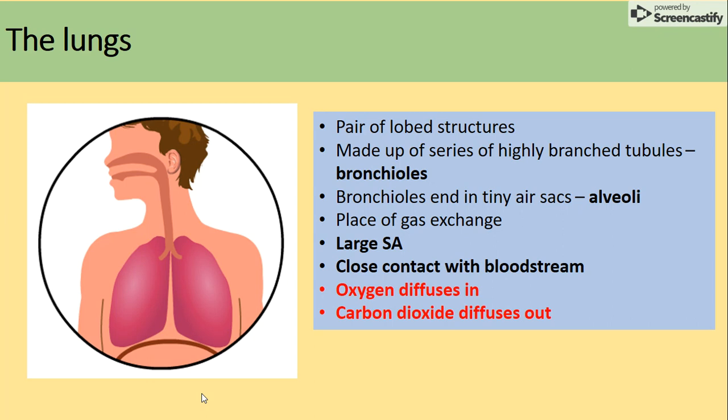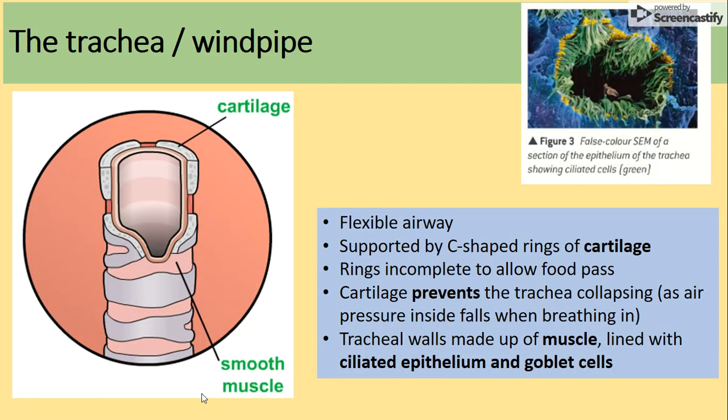The windpipe, or trachea, is a flexible airway supported by rings of cartilage that prevent the trachea from collapsing — similar to the segments seen in insects that prevent collapse. The trachea walls are made of muscle and lined with ciliated epithelium and goblet cells, which is another adaptation.